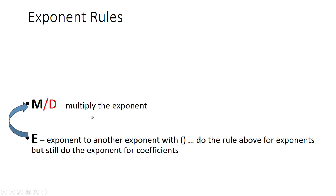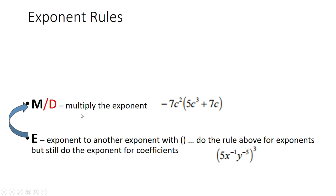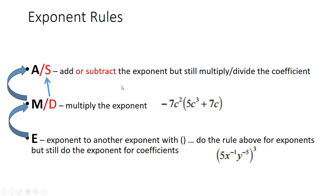The coefficients still follow whatever rule of PEMDAS applies. If we see parentheses with a little exponent on the outside, we multiply those two exponents together. Now, if we have a rule where we're multiplying — meaning it's outside the parentheses using the distributive property — we actually add our exponents together.